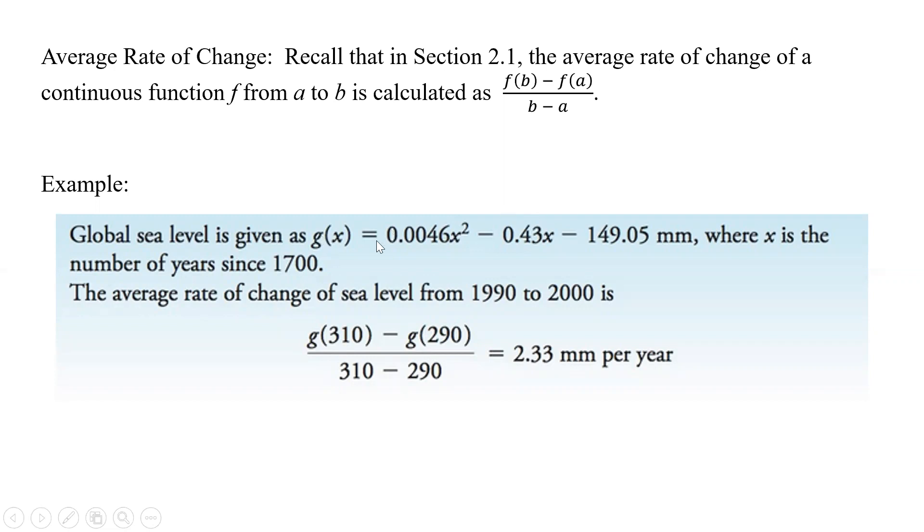So, for example, if we go back to our previous thing we looked at with the sea level, that was our function. If we would plug in our f of b, which was going to be 310 when we hit to that, minus the g of 290 divided by 310 minus 290, it's on average a rate of change of 2.3 millimeters per year.